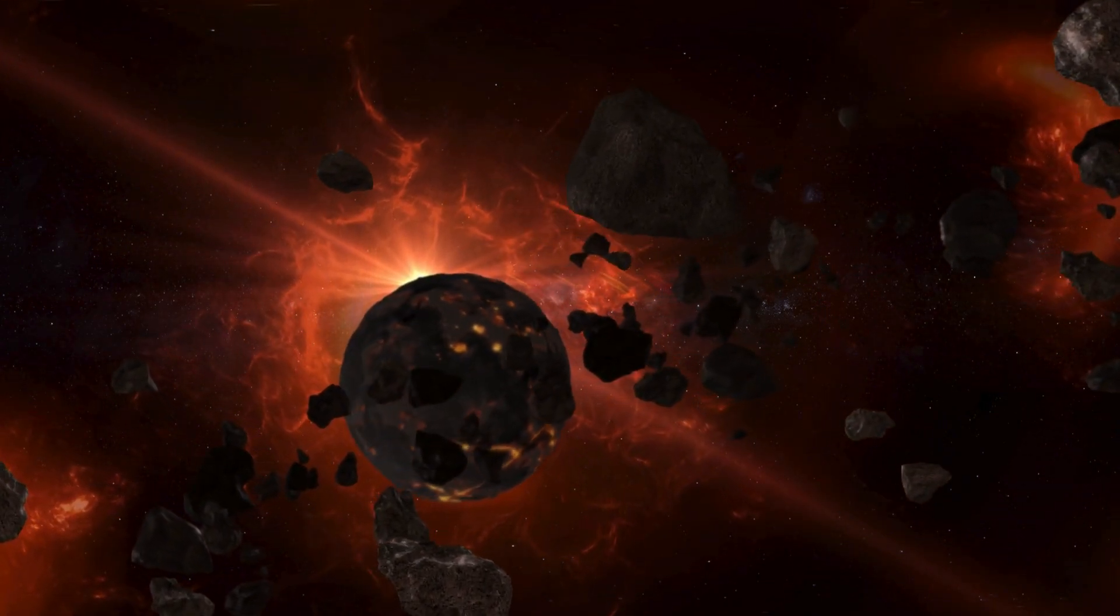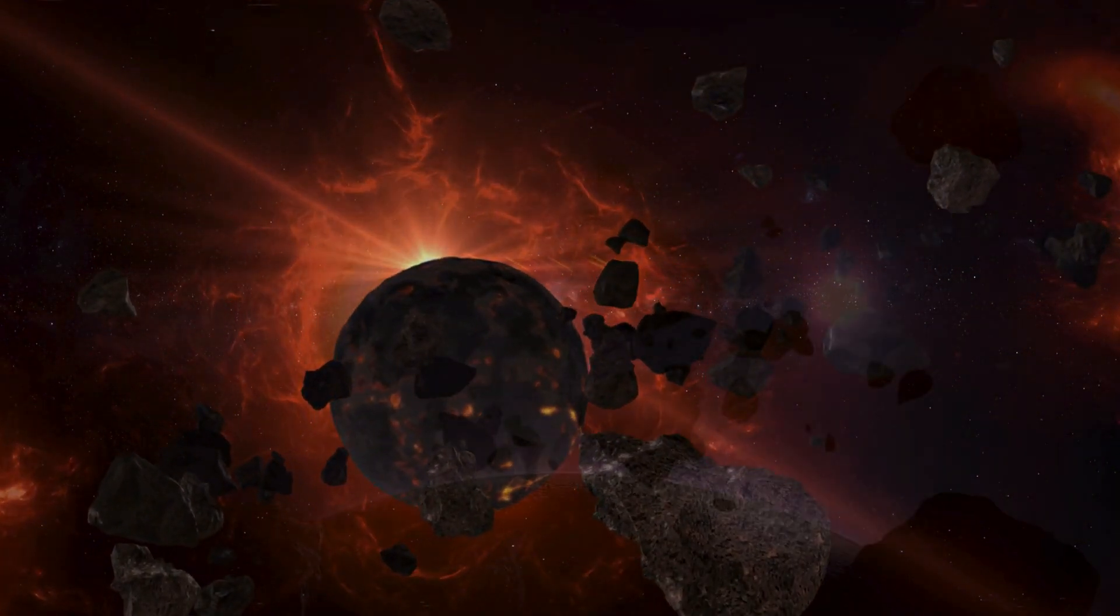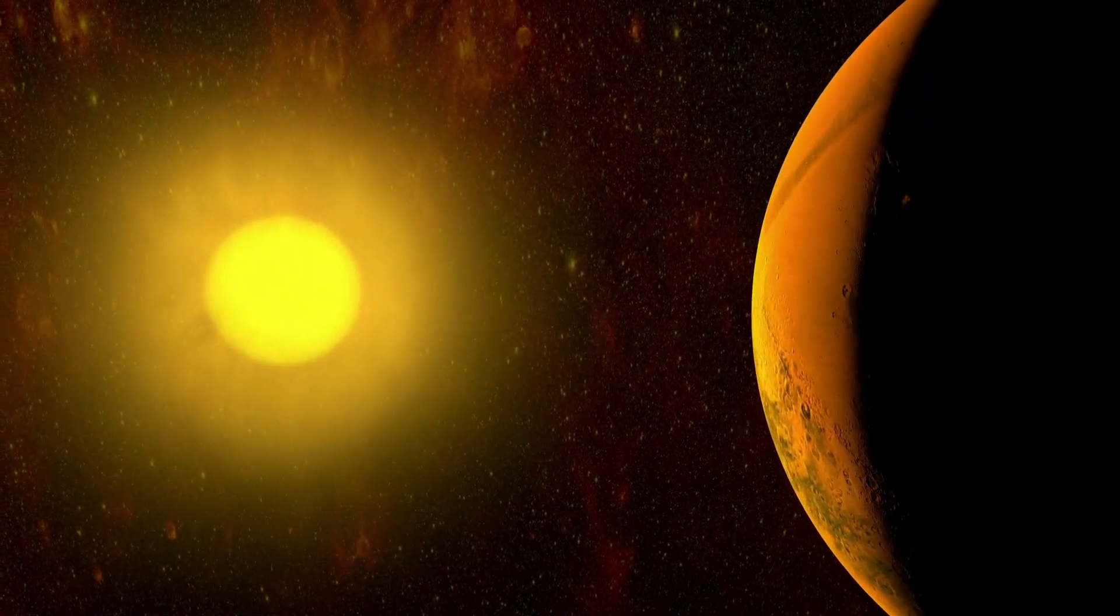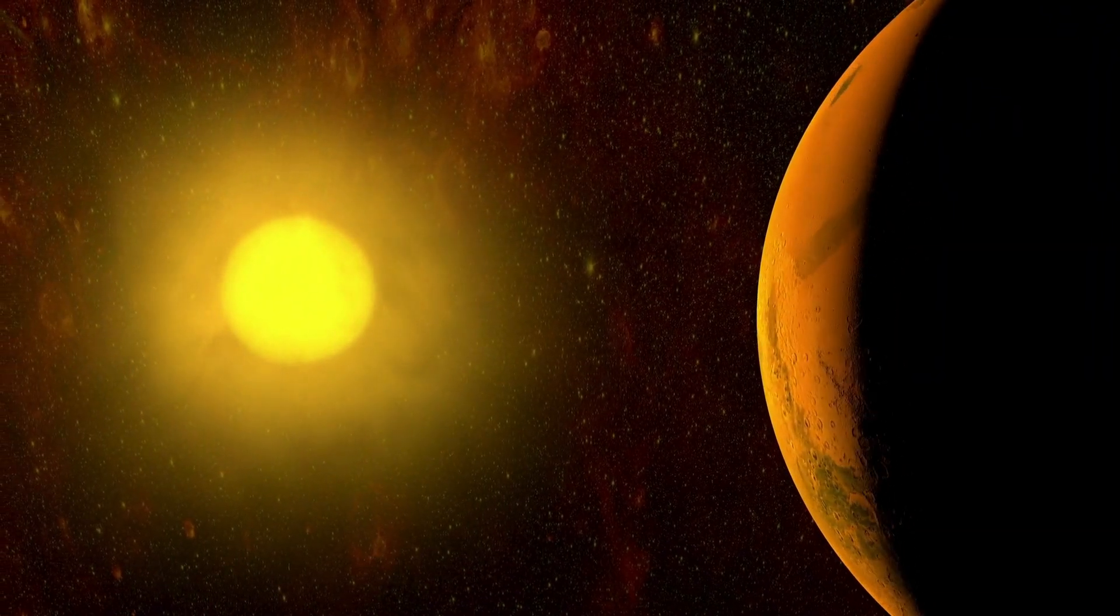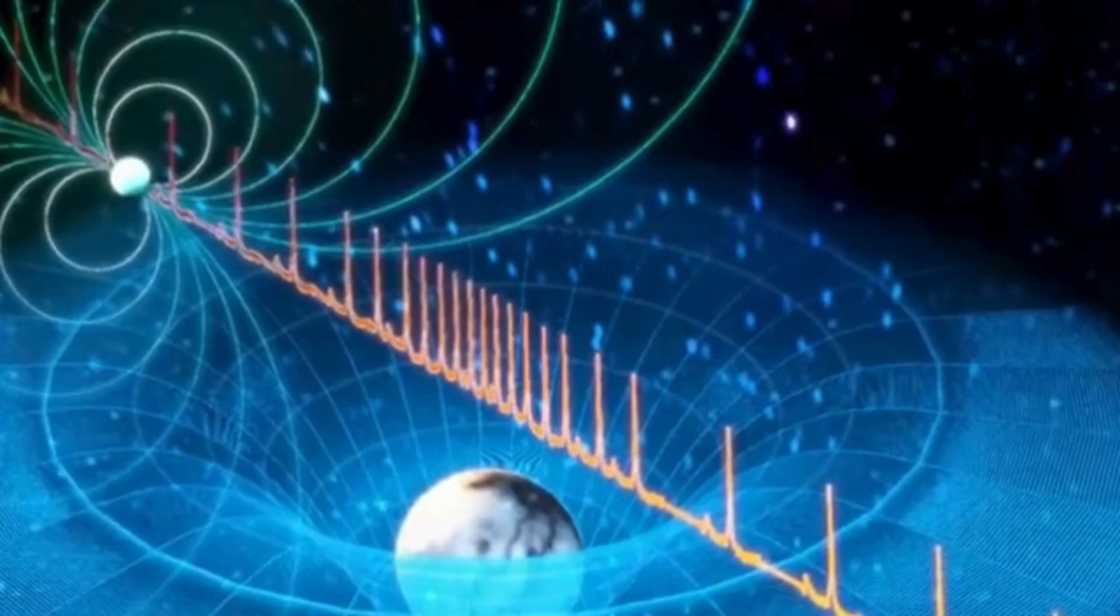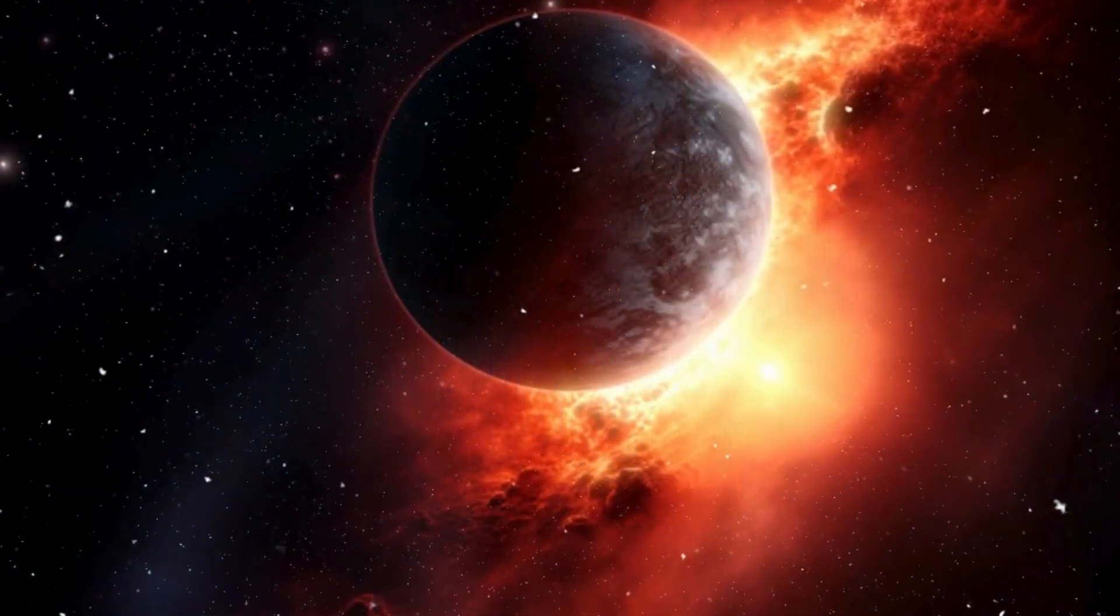Computer simulations have shown that the pulse of energetic particles would drive a lot of chemistry in the atmosphere, creating compounds like nitrogen dioxide that cause acid rain and chemically attack the ozone layer, leading to greater levels of ultraviolet radiation from the sun reaching Earth's surface.